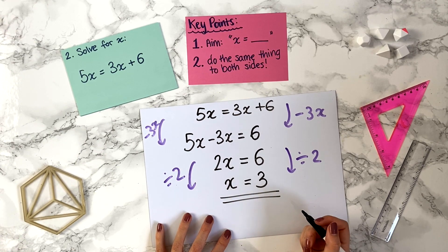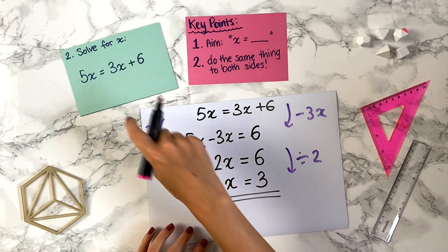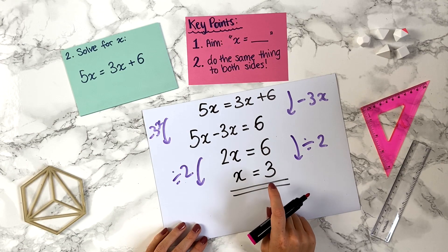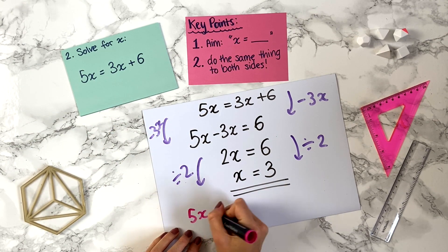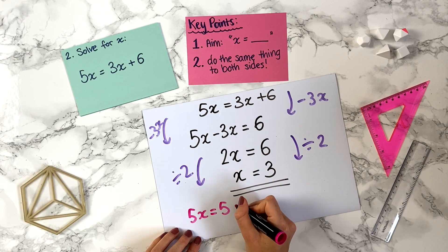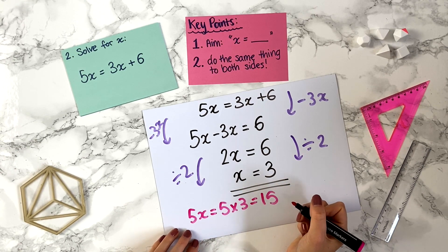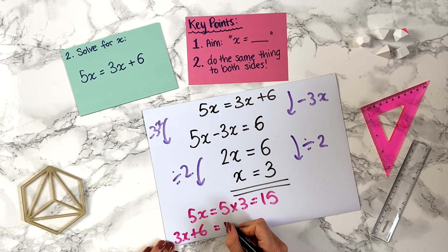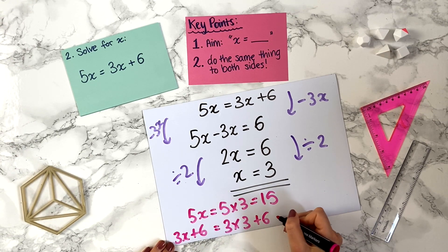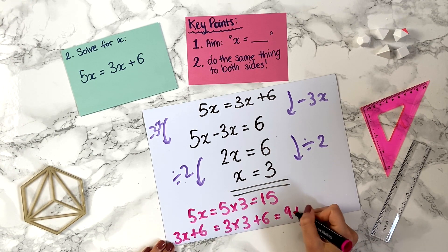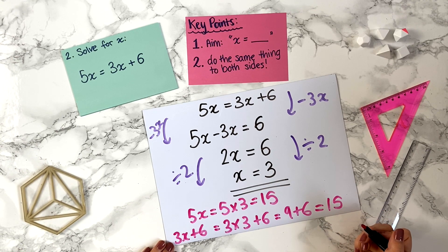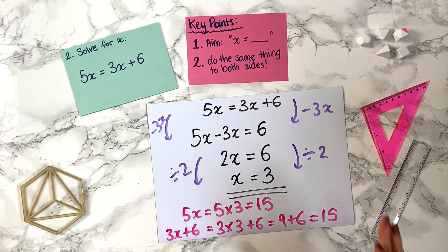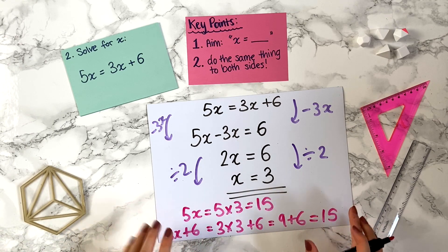We have x on its own, so we're finished. We can check: on the left-hand side, 5 times 3 is 15. On the right-hand side, 3 times 3 plus 6 is 9 plus 6, which equals 15 as well. Both sides match, so we're definitely correct. It's a great way to check in an exam and know you've got full marks.